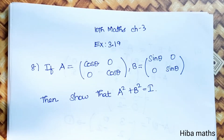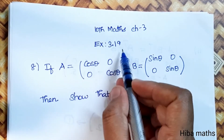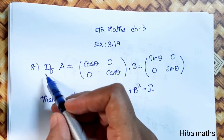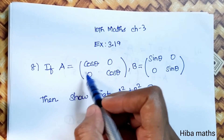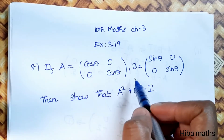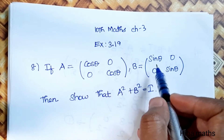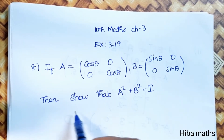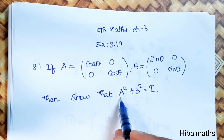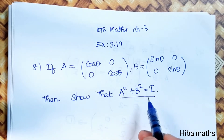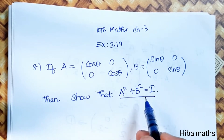Hello students, welcome to Hibamax 10, Standard Max Chapter 3, Exercise 3.19, 8th question. If A is equal to [cos theta, 0; 0, cos theta], B is equal to [sin theta, 0; 0, sin theta], then show that A squared plus B squared equals I.